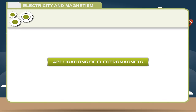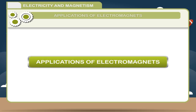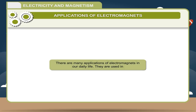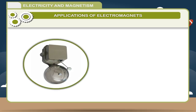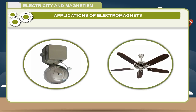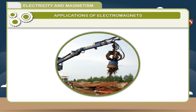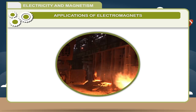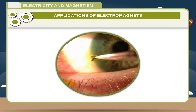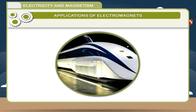Applications of electromagnets: There are many applications of electromagnets in our daily life. They are used in electric appliances such as electric bells, electric fans, etc.; in steel works and scrap yards; for loading furnaces with iron; by doctors to remove foreign bodies like iron filings; and in modern trams and trains such as the maglev train.